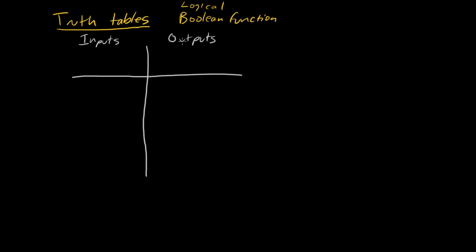You can have one or many inputs, or you can have one or many outputs. It could be one input and one output, multiple inputs and one output — you can mix and match. But inputs go on the left side, and outputs go on the right-hand side.